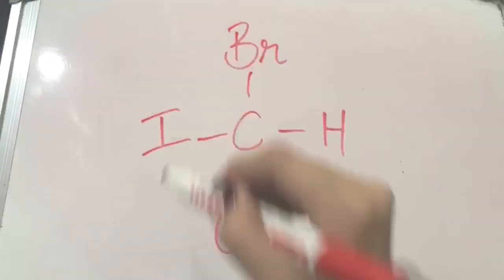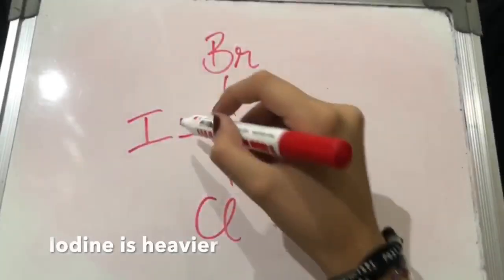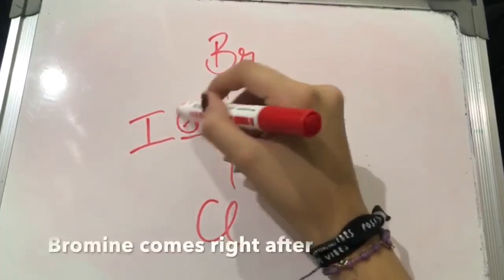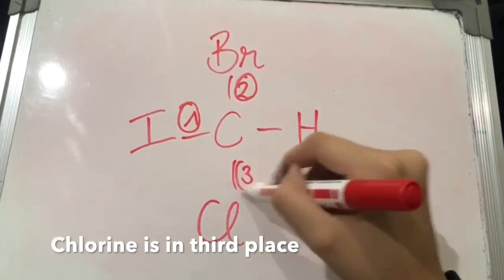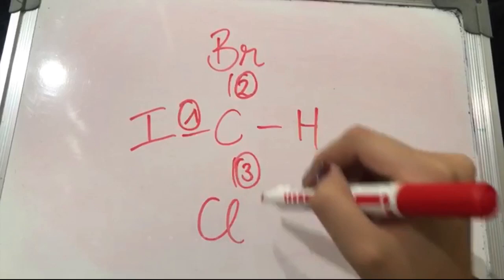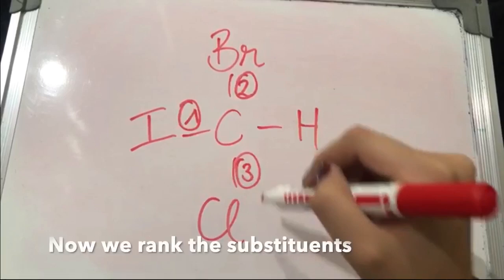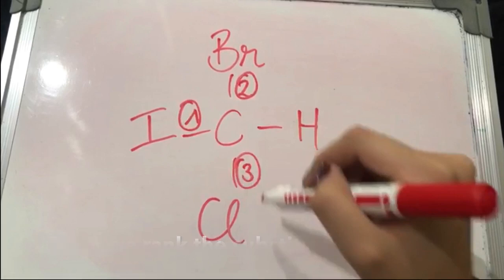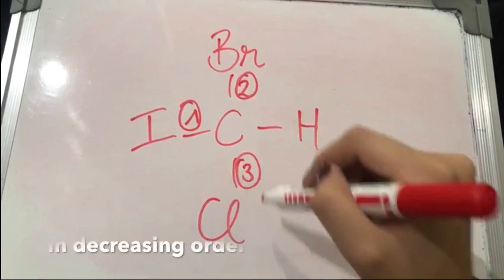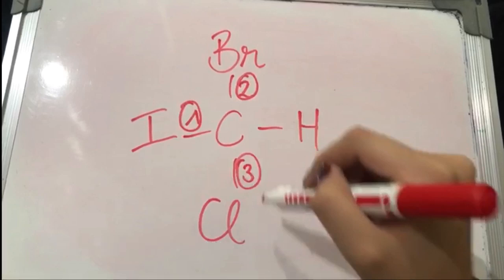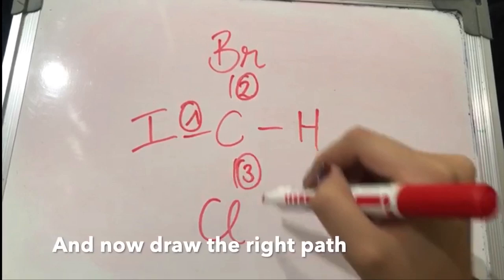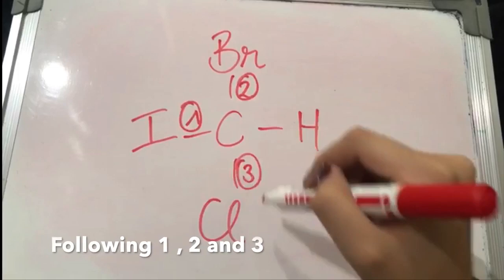Bromine, hydrogen, chlorine, iodine — iodine is heavier, bromine comes right after, chlorine is in third place, hydrogen is lightest. Now we rank the substituents in decreasing order. Put the lowest away from me, and now we'll draw the right path.